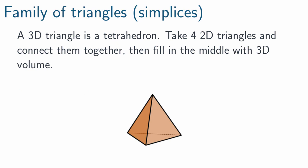Now, a 3D triangle, we learned, is a tetrahedron. You take four different 2D triangles and you assemble them all together. You connect them all together so they make this tent shape. And then you fill in the middle with 3D volume, almost like you're injecting it with foam volume. And that's how you make a tetrahedron.